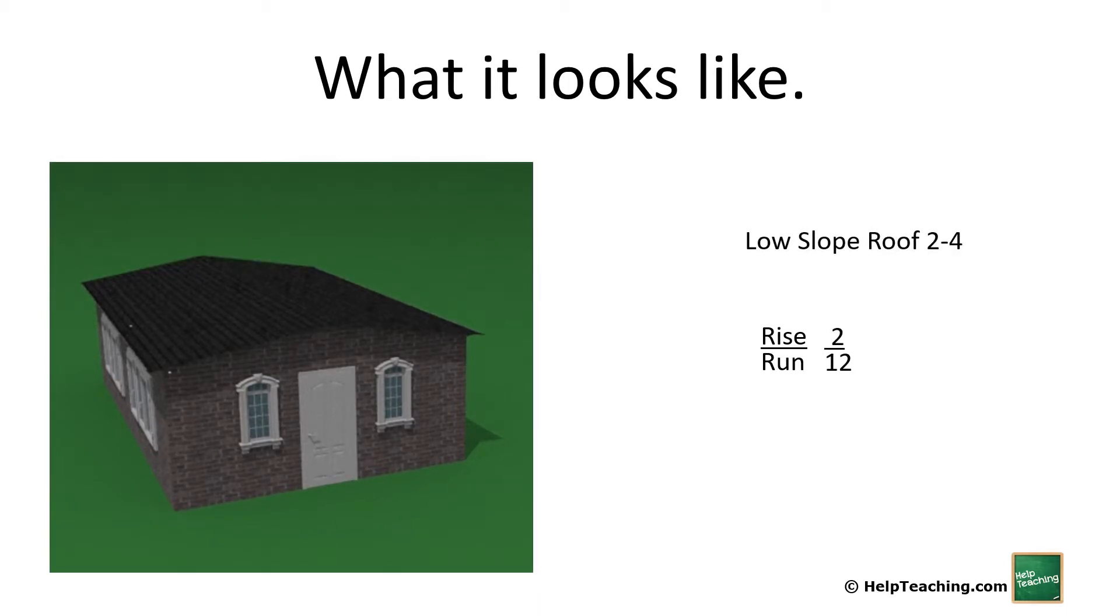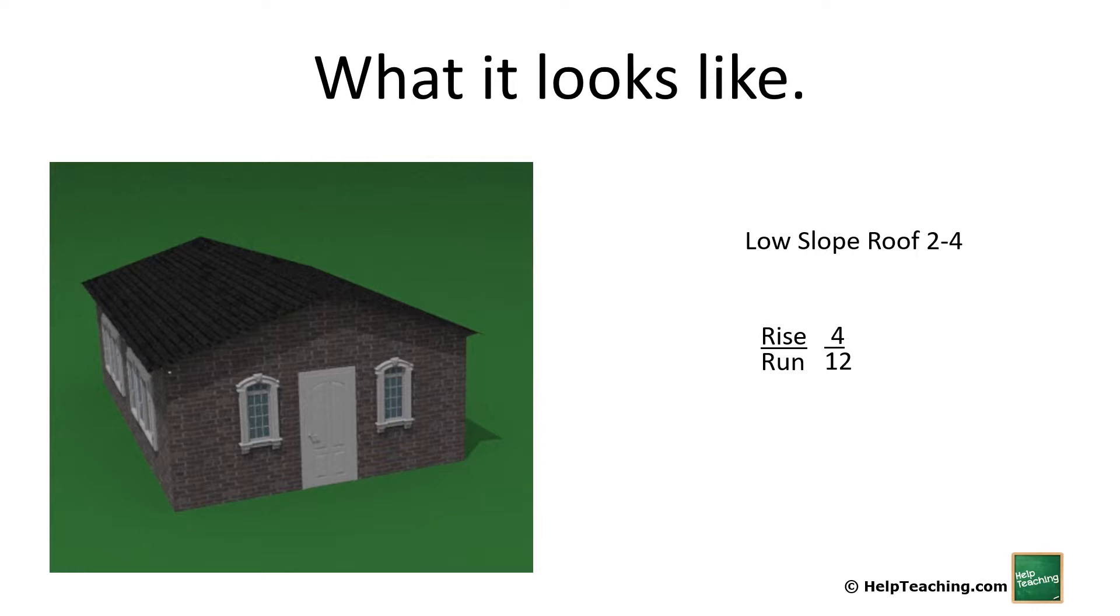Then we go to the low slope roof which starts again at 2 and 3:12 and 4:12. So 4:12 is getting significantly steeper and will certainly shed water fine. It's still a little on the low side for areas where say there's high snow load or things like that, but for a lot of locations a 4:12 is plenty of slope.